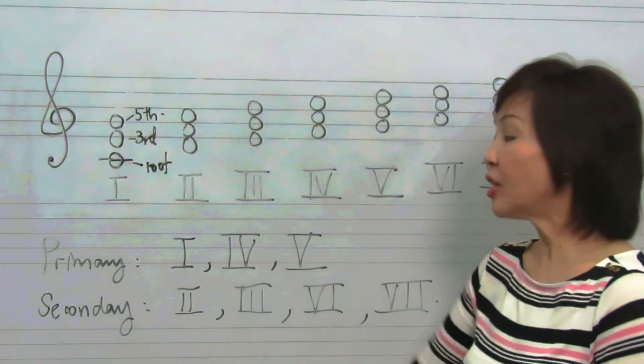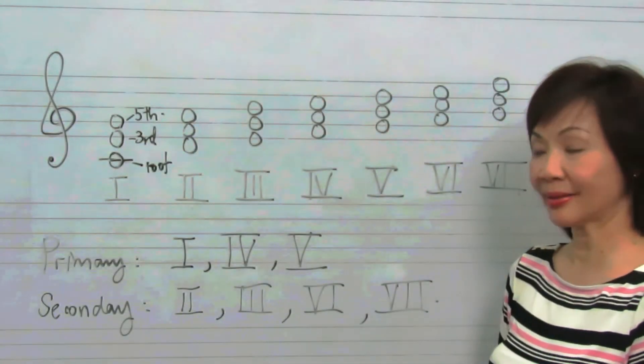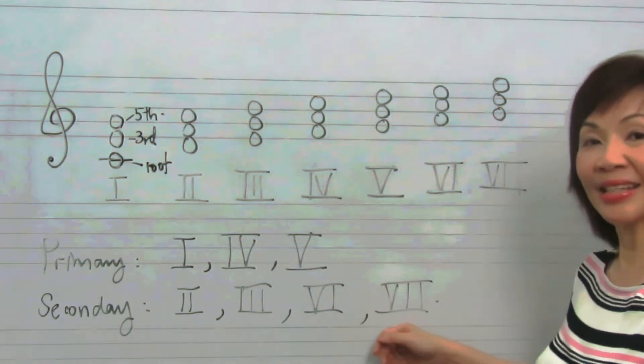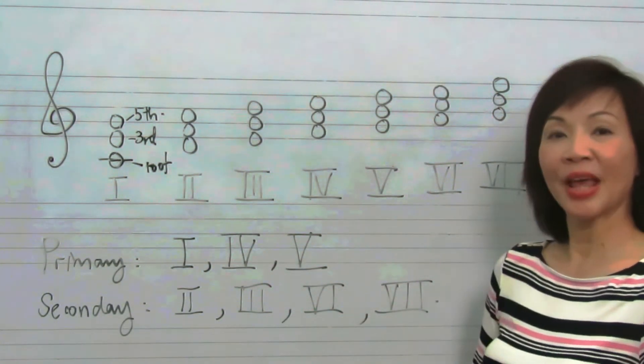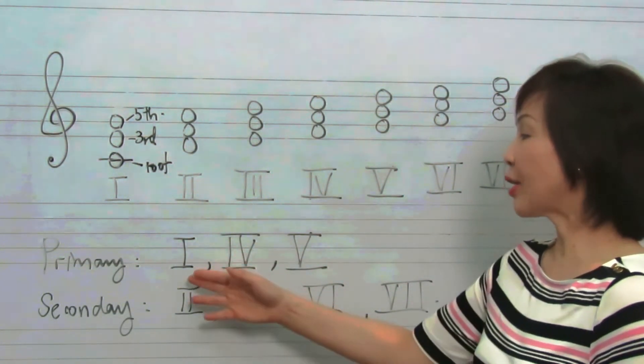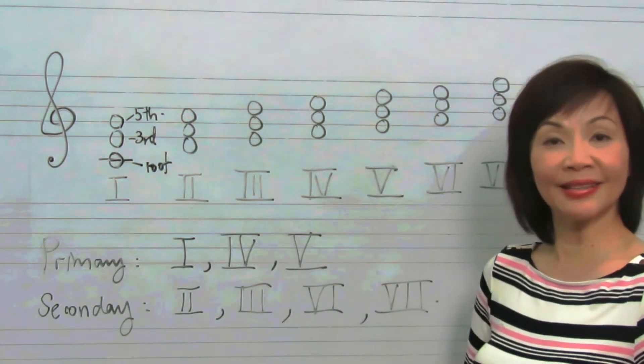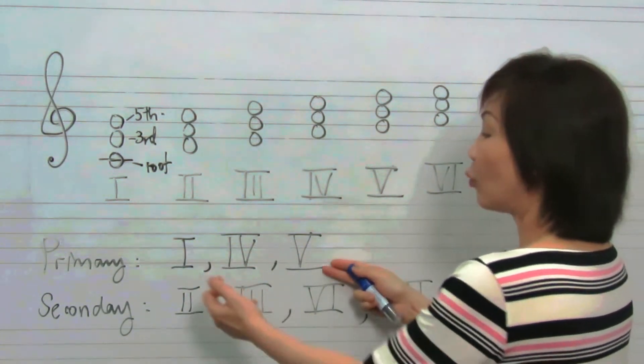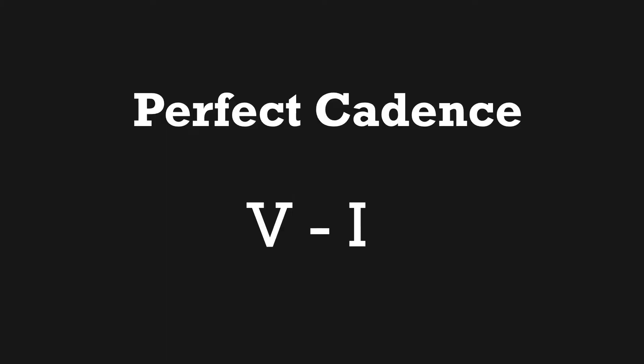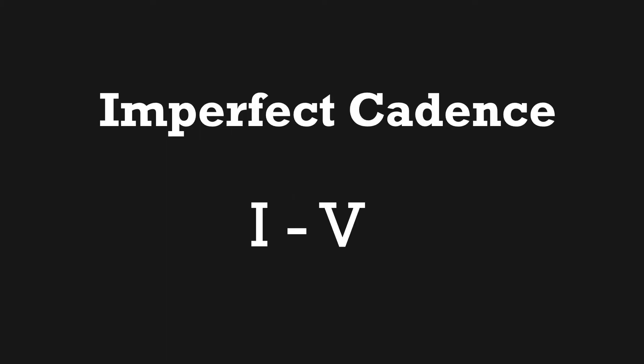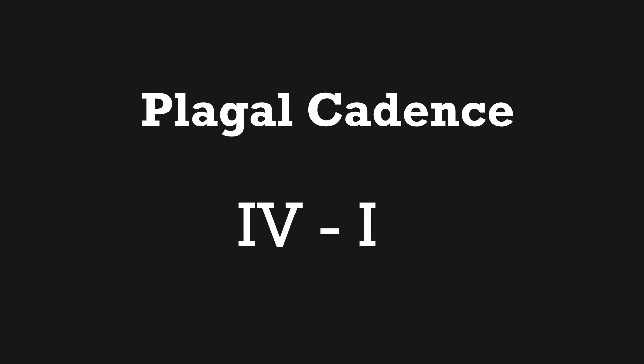The other triads, we shall call them secondary triads, which are 2, 3, 6, and 7. You will notice that primary chords of 1, 4, and 5 form cadences: 5-1 for a perfect cadence, 1-5 for an imperfect cadence, 4-5 for an imperfect cadence, a plagal cadence with 4-1.